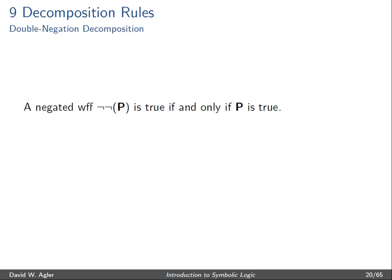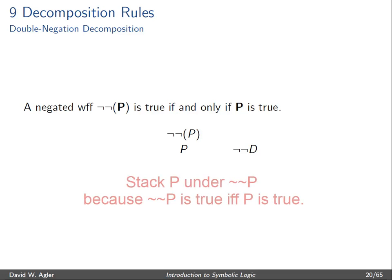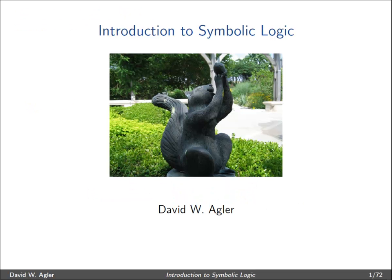Finally, a double negated well-formed formula, not not P, is true if and only if P is true. So this gives us one condition under which the double negated formula is true, and so we can simply stack P. Alright ladies and gentlemen, this has been another video on the language of propositional logic. Like the video if you found it helpful and subscribe if you're interested in seeing more videos on topics in logic.